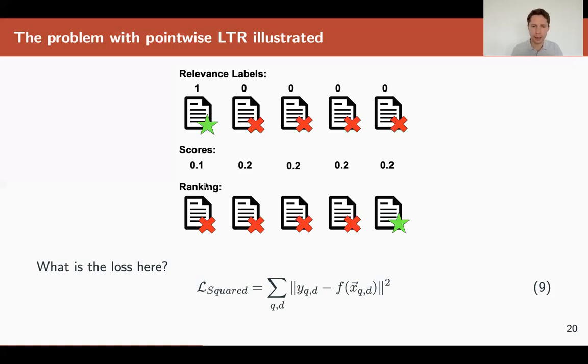So basically, each of these non-relevant documents can be ranked first, according to our model. For example, this one is ranked first. Obviously, this ranking is much worse than before.